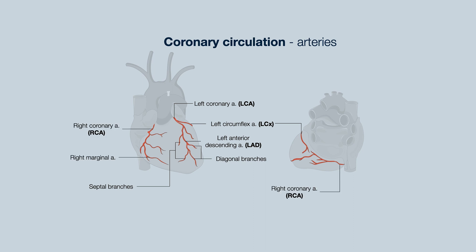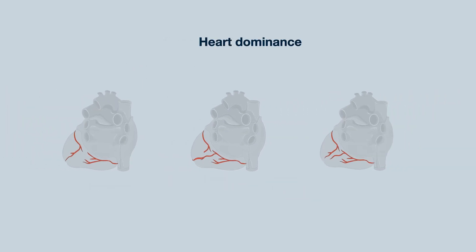The right coronary artery forms the right marginal artery, which supplies the anterior and diaphragmatic surface of the right ventricle. The right coronary artery can also extend posteriorly to supply the posterior aspect of the heart and form the posterior descending artery. Coronary dominance refers to which artery dominates in supplying the posterior aspect of the heart, and that is largely determined by which artery forms the posterior descending artery. It can either be left, right, or co-dominant.